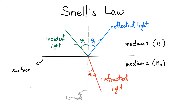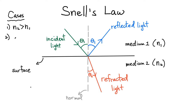So now we have two cases to consider. I can either have the index N2 bigger than N1, or I can have it smaller than N1. We're going to look at both of those cases. Case number one is when the index N2 is bigger than N1 — that's actually the case I drew here. Case number two is the opposite, when the index of refraction of medium 1 is smaller than N2.